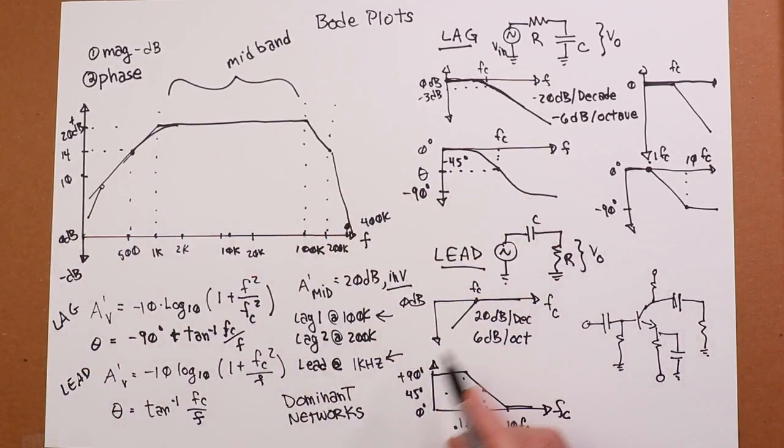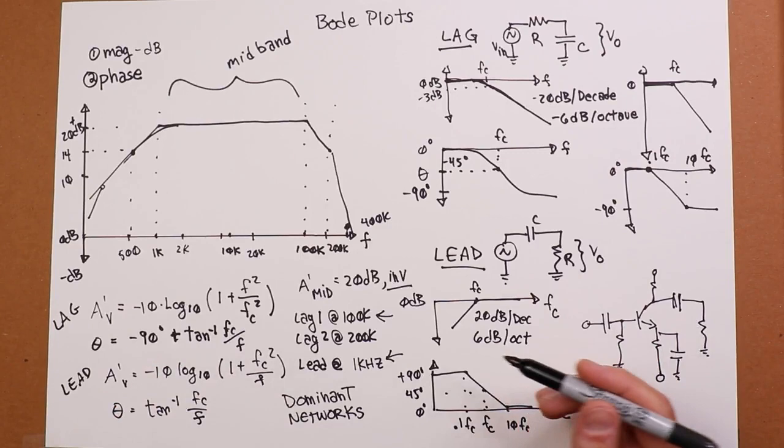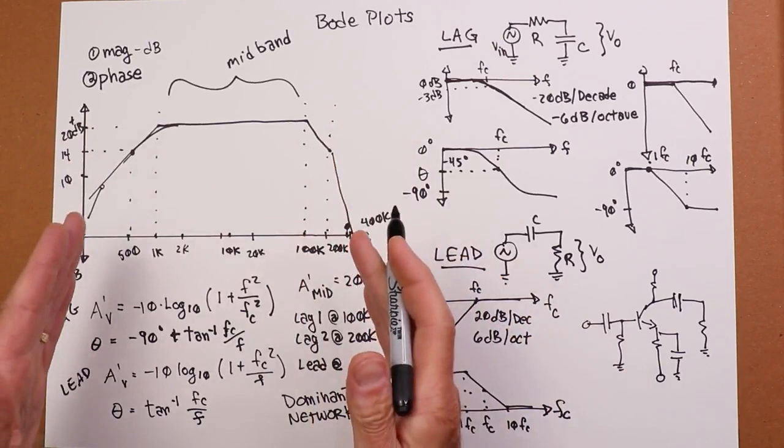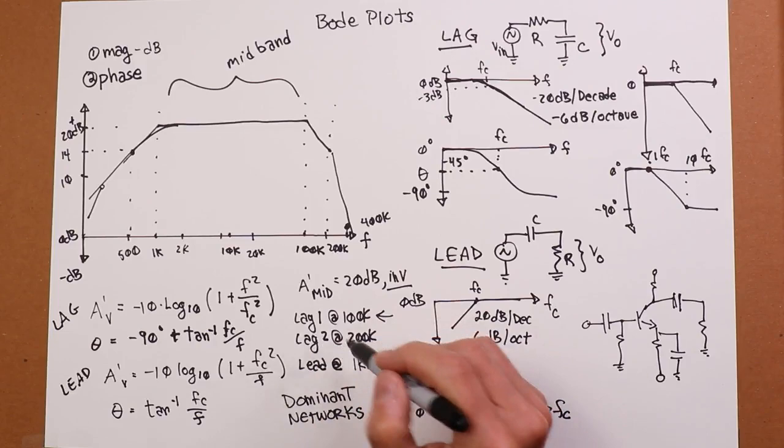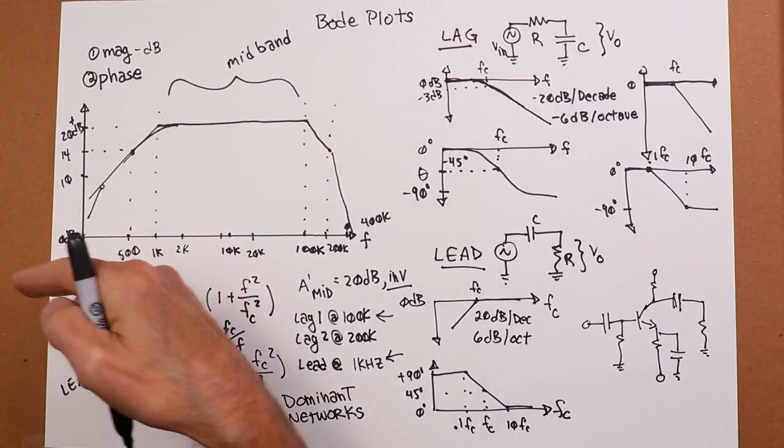So I would do the same kind of thing. And then I would identify my critical frequencies, the 100k, 200k, 1k. And I know my phase shifts mostly come within a decade up and down. You can count up the number of networks you have to figure out what the extreme roll-off rate is, or what the extreme phase shift is. Two lags, 6 dB per octave each. So ultimately it's going at 12 dB per octave or 40 dB per decade. There's only one lead, so ultimately it's going to fall at 6 dB per octave, 20 dB per decade.